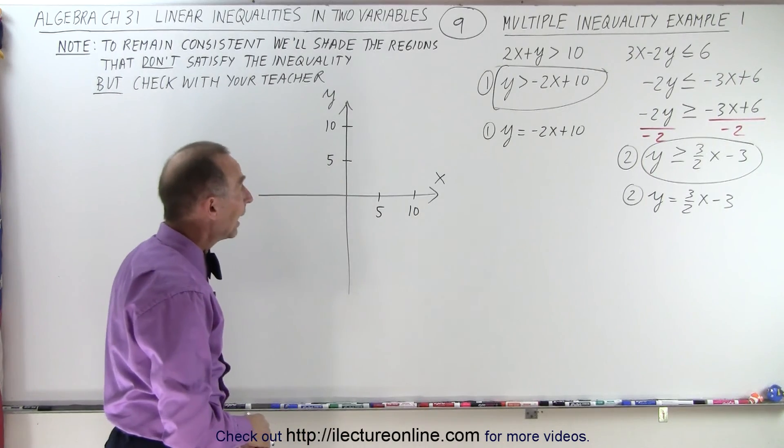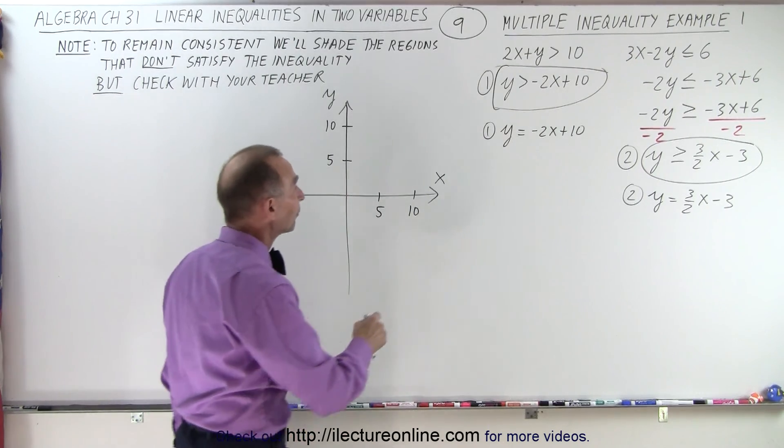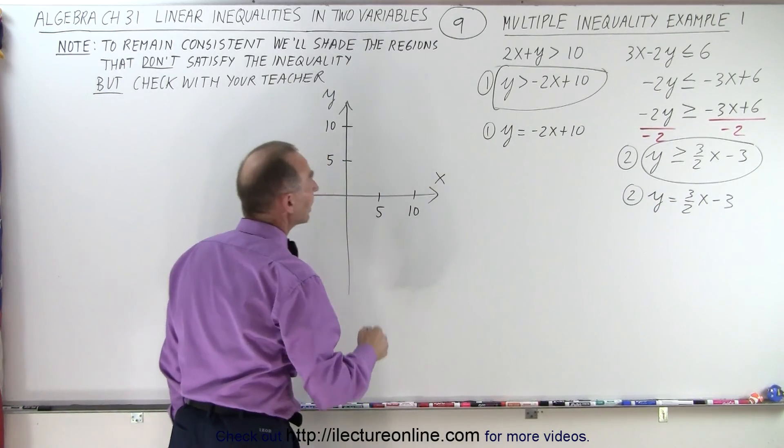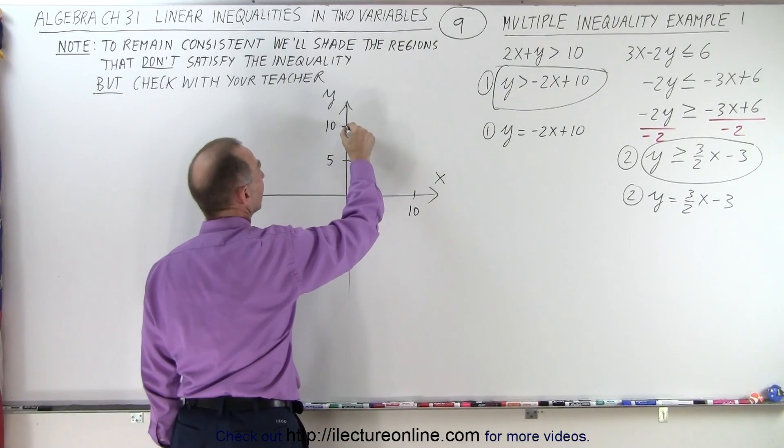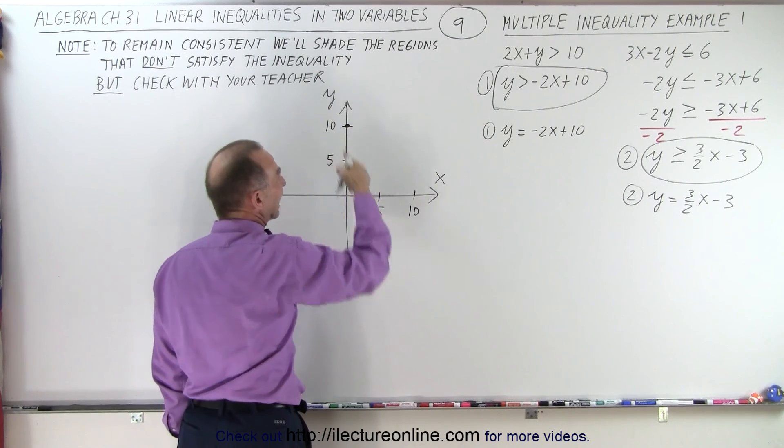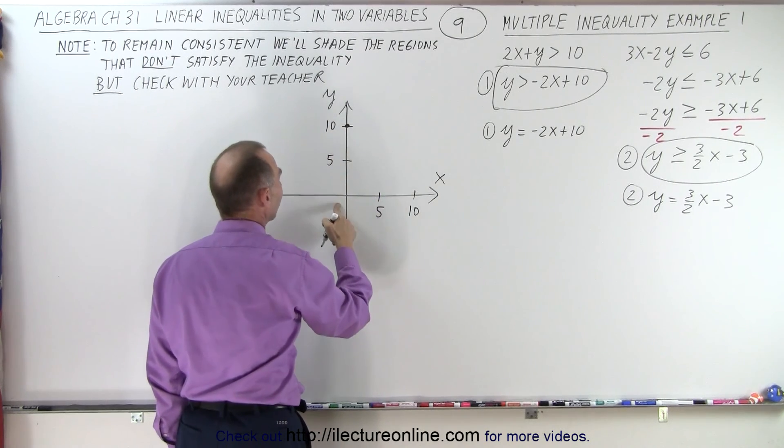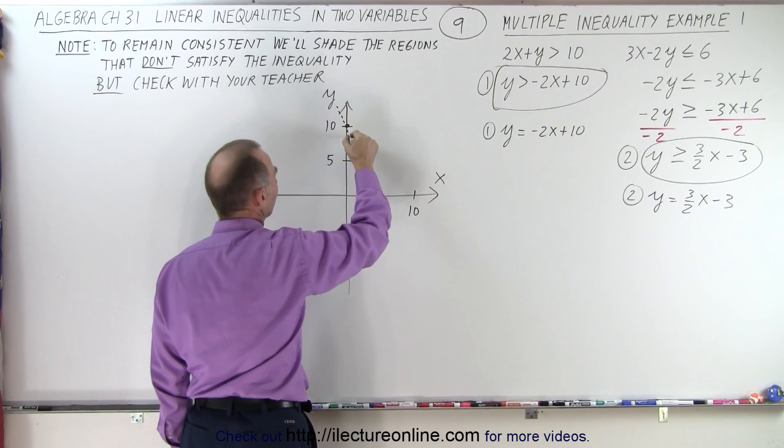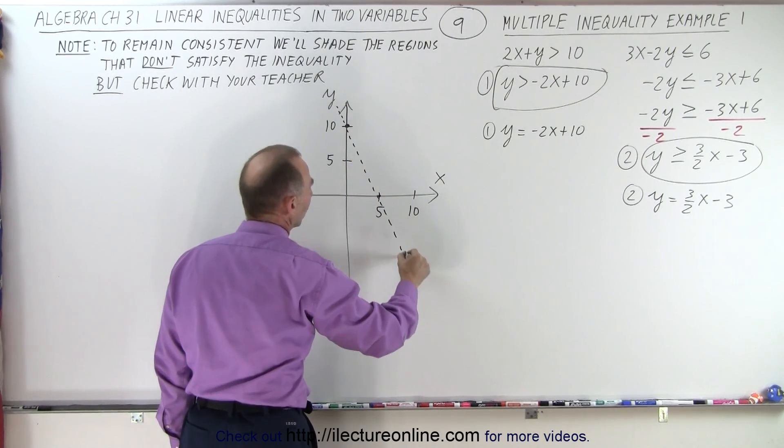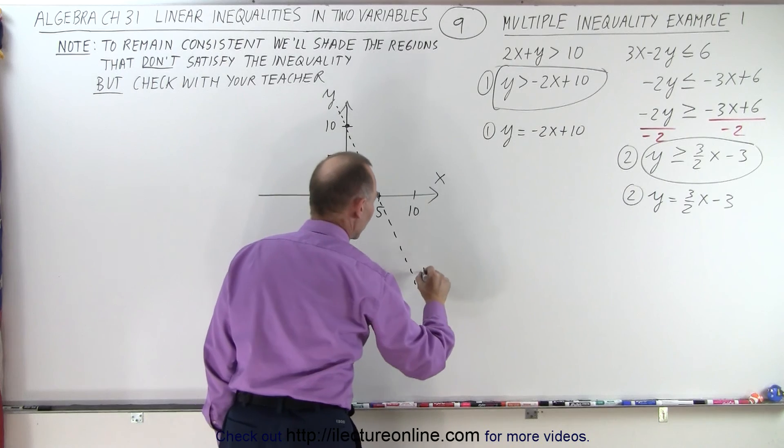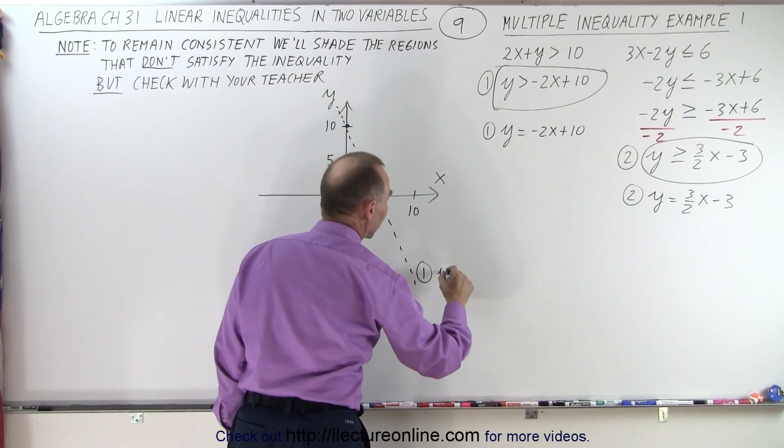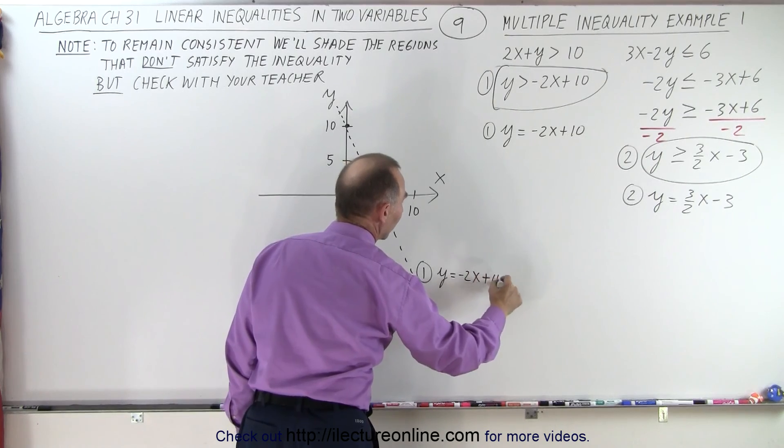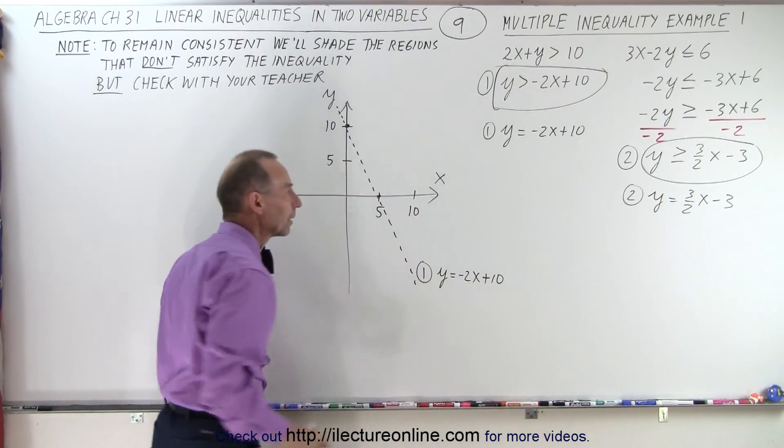We can go ahead and draw those lines now. Be careful, this is going to be a dashed line and that's going to be a solid line. The intercept is plus 10, it's right there. The slope is a negative 2, so by the time we drop 10, we go over 5. There's the other point. This will be a dashed line, and we're going to label it line number 1, y equals minus 2x plus 10.